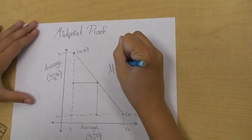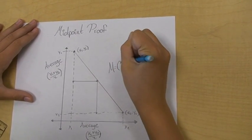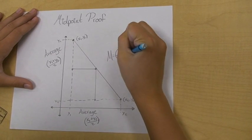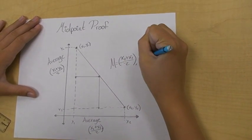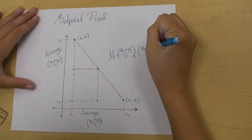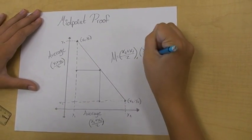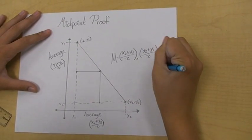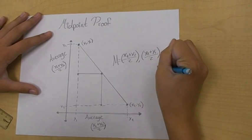The midpoint is defined as x1 plus x2 over two, comma, y1 plus y2 over two. And that is our midpoint proof.